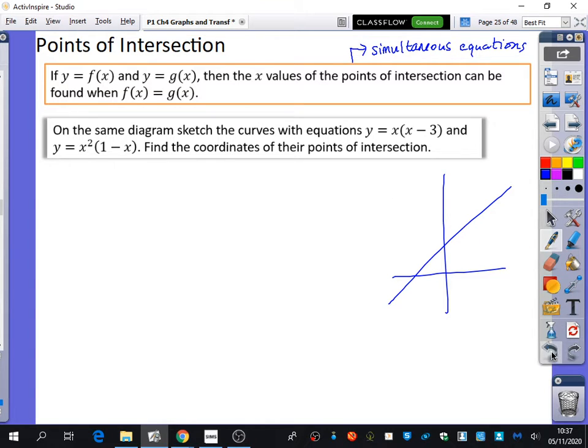So let's just read this one that we've got. It says, on the same diagram, sketch the curves with equations y equals x(x - 3) and y equals x²(1 - x), and then find the coordinates of their point of intersection. So I'm going to start off by having a look at y equals x(x - 3). First of all, what's the shape?